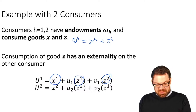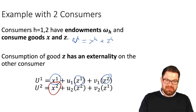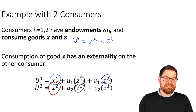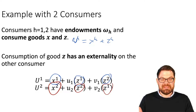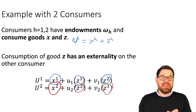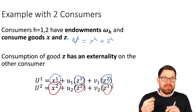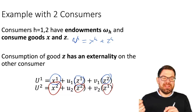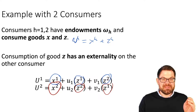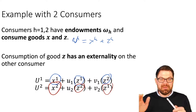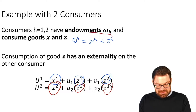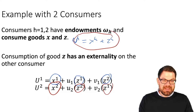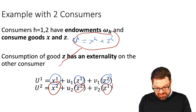The same goes for person two: they derive utility from their consumption of good x, their consumption of good z, and also from person one's consumption of good z. That is the basic setup. We are going to compare the privately optimal consumption of x and z — especially z — relative to the socially optimal consumption of z, and ask whether there is a discrepancy and what it depends on.